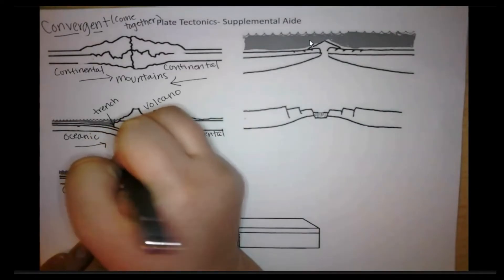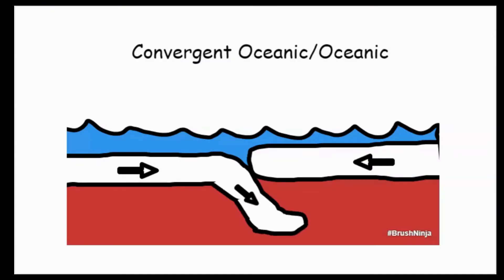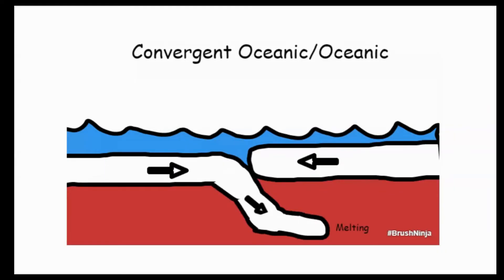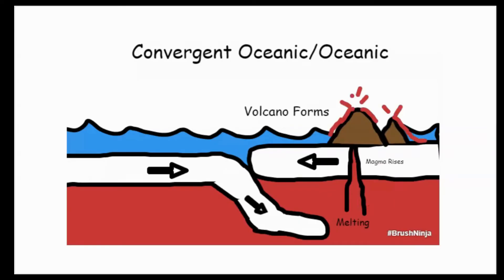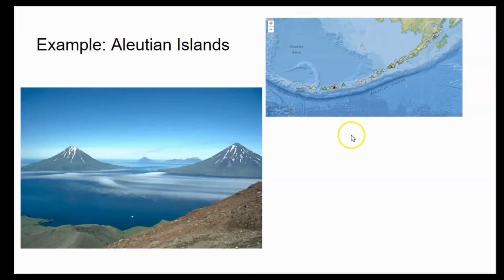Let's look a little bit closer and see this come together. Again, we have one crust diving down underneath the other. That melting happens because of convection. The hot magma then rises to have those volcanoes form. We also have an ocean trench and earthquakes in that area. A common example of this is the Aleutian Islands in Alaska. Here we can see the two oceanic crusts, one going underneath the other, an island arc forming, the Aleutian Trench, and those volcanic islands.